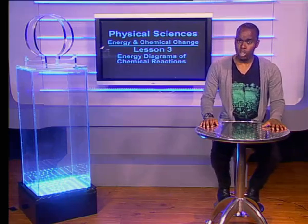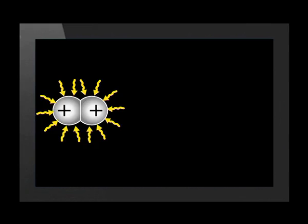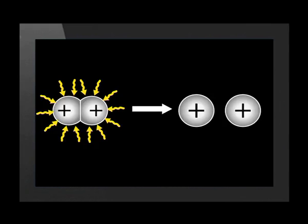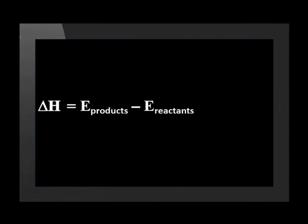We know that we have to add energy to break bonds. The products in this reaction are free atoms, but these free atoms are at a higher energy than the reactant molecule. This is called an endothermic reaction. The energy of the reactants is lower than the energy of the products. The change in energy is known as the enthalpy change or heat of the reaction. The change in enthalpy can be calculated using the formula: delta H equals the energy of the products minus the energy of the reactants.